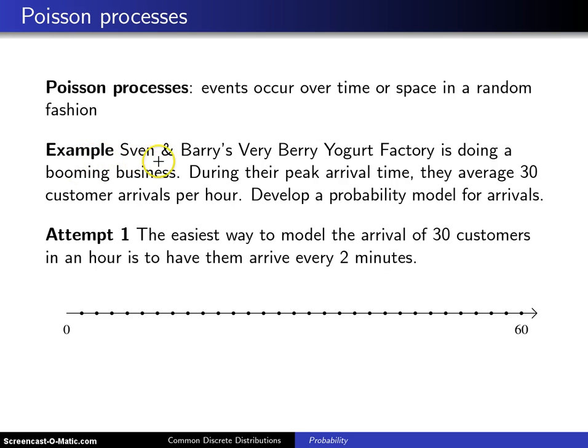Here's the example. Sven and Barry's very berry yogurt factory is doing a booming business. During their peak arrival time they average 30 customer arrivals per hour. Develop a probability model for arrivals.